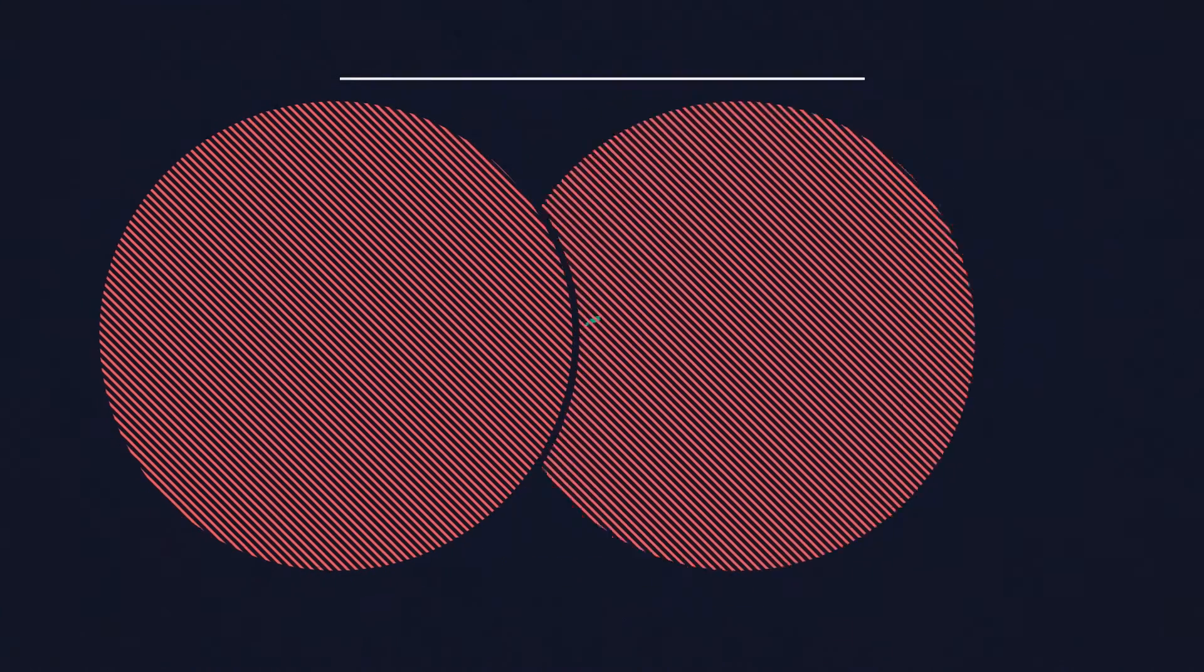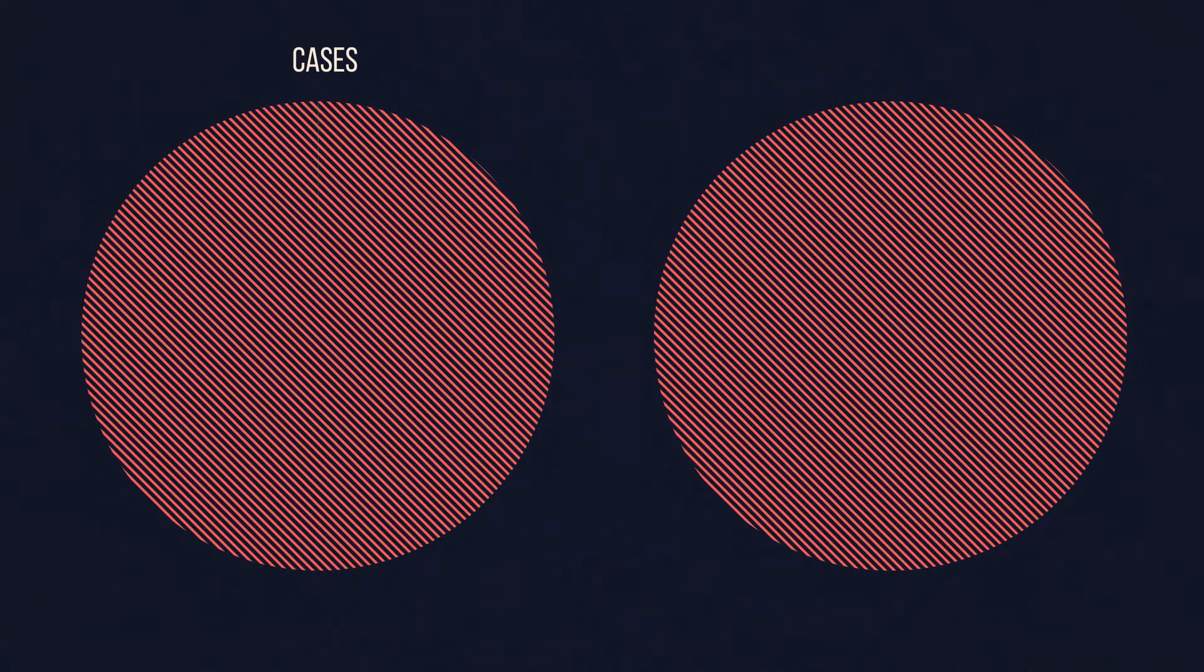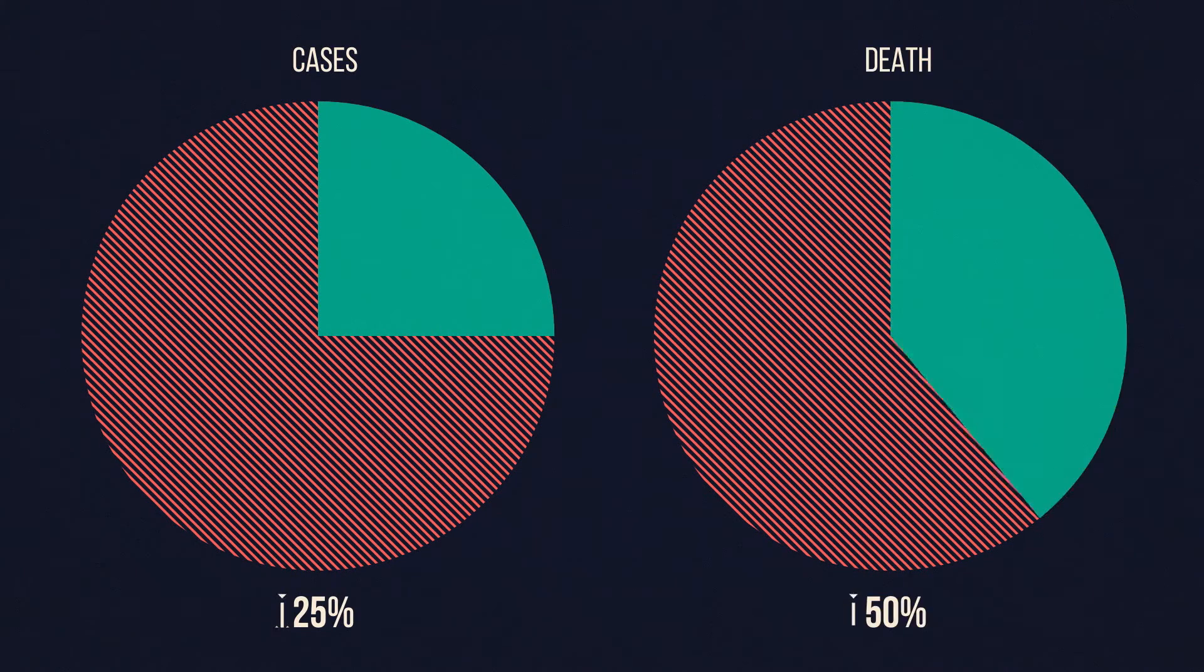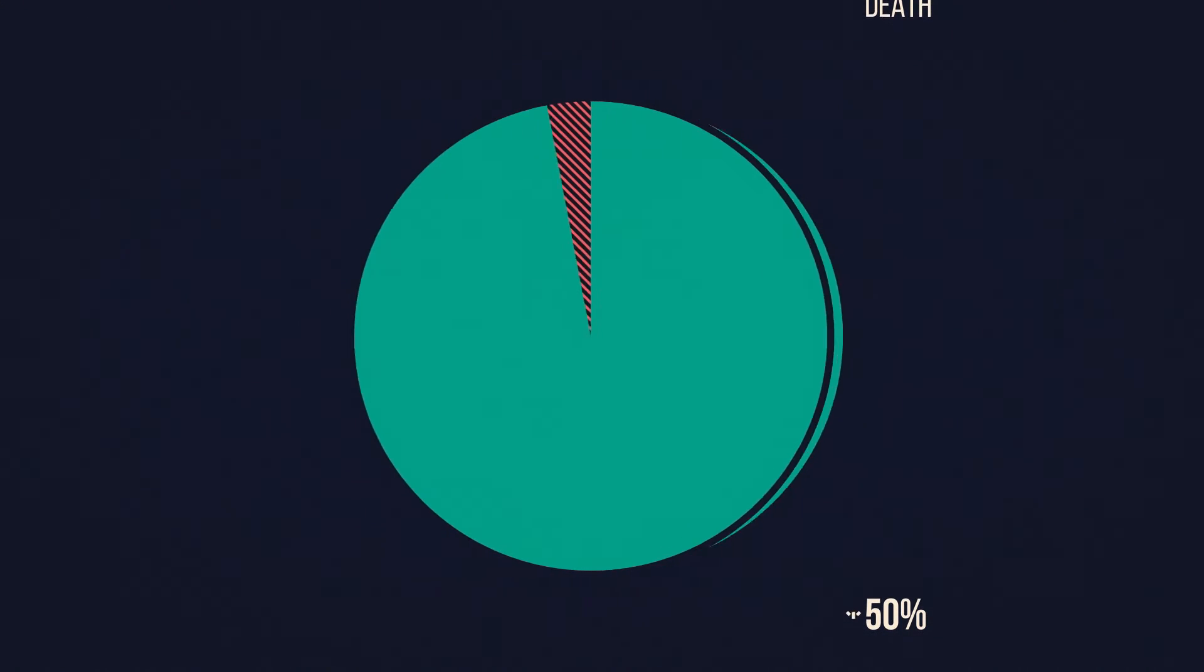The World Health Organization wants to reduce the number of dengue cases by 25% and the death rate by 50% by 2020. In order to achieve this,